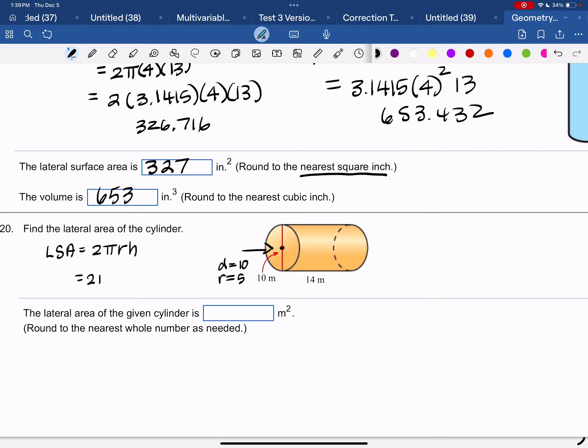So 2 pi, 5 times 14 is 2 times 3.1415 times 5 times 14 is 439.81 or 440 square meters squared because we're doing area is always measured in squares.